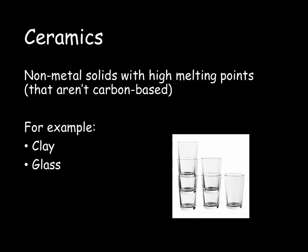Clay is a soft material when it's dug up from the ground. This means it's very useful for moulding into different shapes. However, when we treat it with heat — when we fire it in an oven — it hardens to form our ceramic. This means it has the ability to be moulded when wet and then hardened, which makes it perfect for making pottery and bricks.